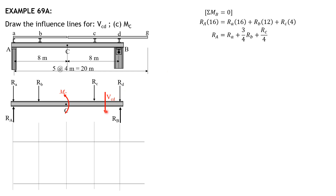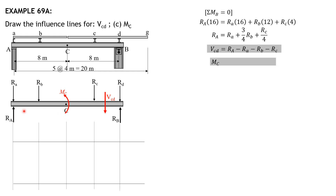For shear in panel CD, considering forces to the left, excluding M sub C because this is a separate element, shear equals R_A minus r sub small a minus r sub small b minus r sub small c. For moment at C, summing moments about C considering forces to the left, M sub C equals R_A times 8 minus r sub small a times 8 minus r sub small b times 4. These are our working equations to plot shear in panel CD and M sub C.